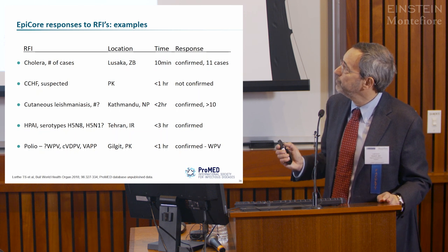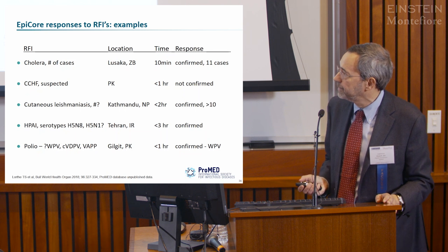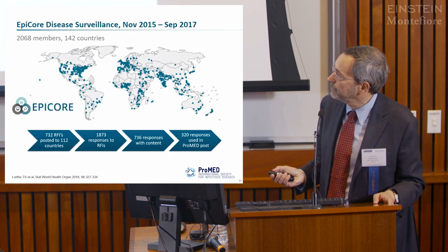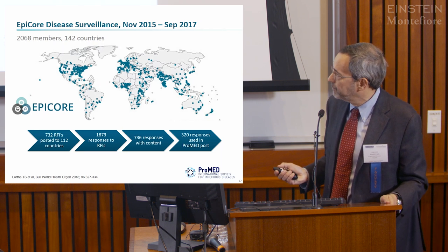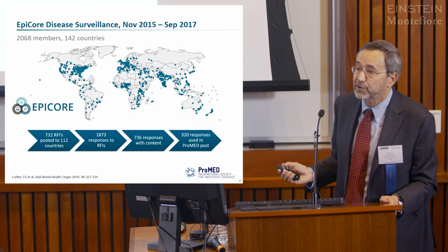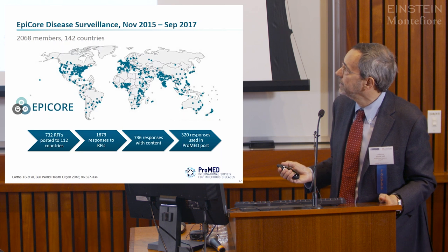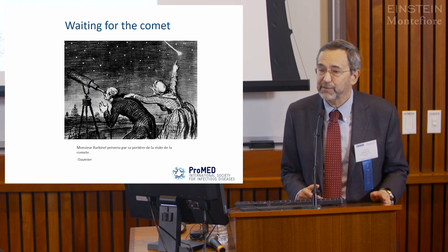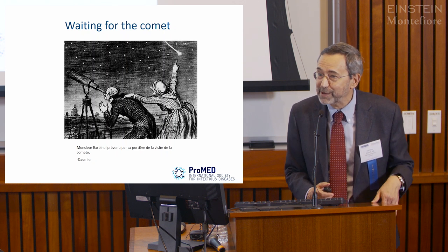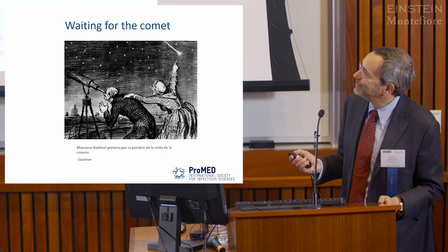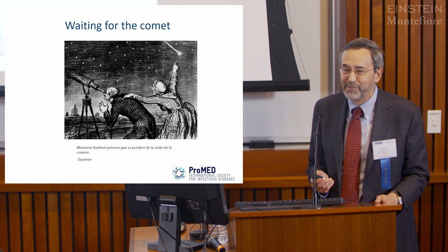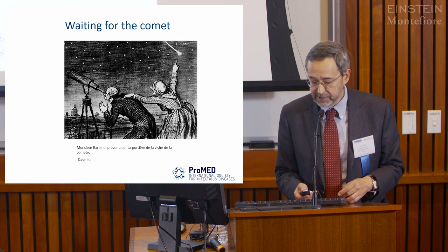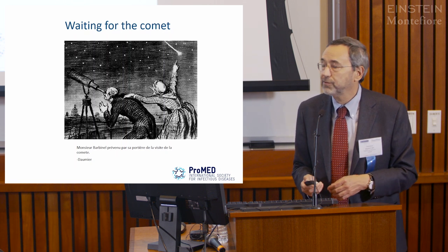We've published a review in the WHO Bulletin reporting on 730 RFIs, over a thousand responses, and we used 320 of these responses in ProMed reports. The final slide used by a journalist at the very first International Meeting on Emerging Diseases shows us looking closely for the first outbreak of H5N1. When the real flu pandemic came, it came from a different continent, a different species. A plea to this group: stay broadly tuned in to emerging disease events.